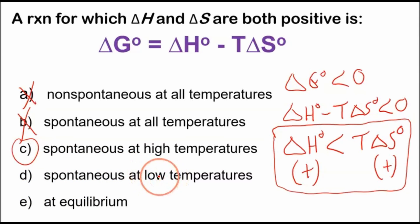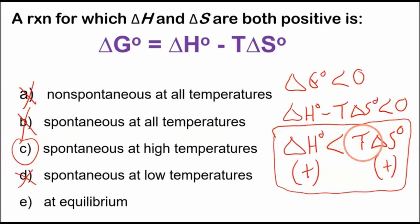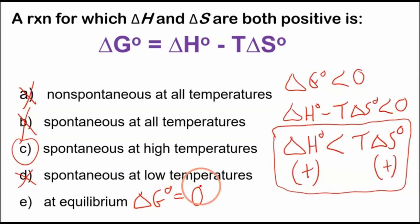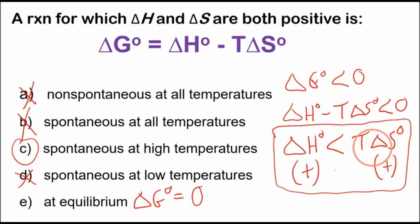Spontaneous at low temperatures — that's the other way around, and won't work. If the temperature is really low, T·ΔS is very small and won't exceed ΔH, so that's not good. Is it at equilibrium if both are positive? The requirement for equilibrium is that the standard Gibbs energy change equals zero. We're not saying it's equal to zero — it depends on temperature. So it's not at equilibrium.